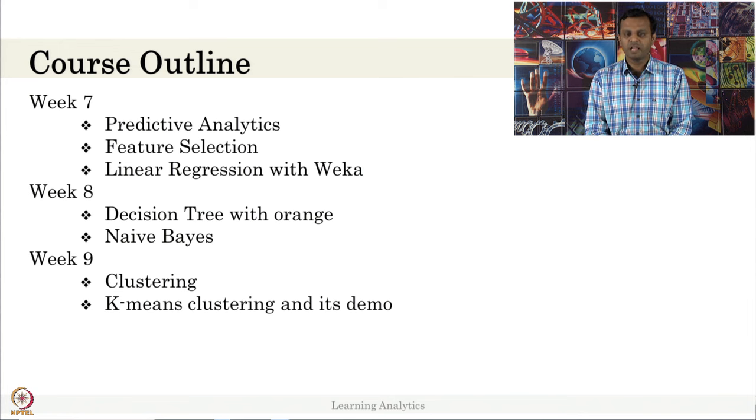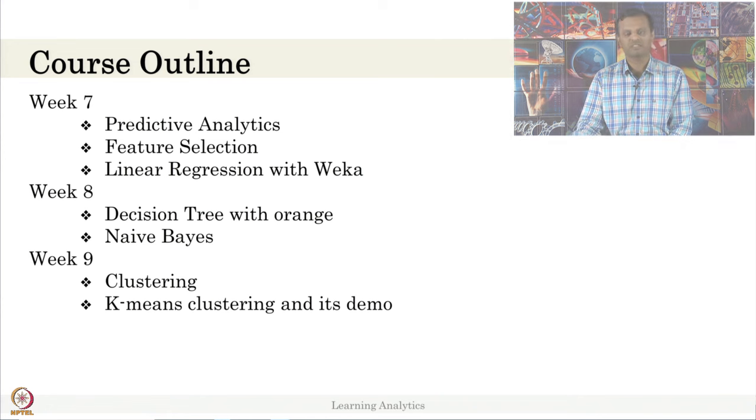In week eight, we will describe what is decision tree with Orange and we will talk about naive Bayes. As I mentioned this course, although it is not an ML course, we will touch all these algorithms which are very basics. We will explain the concepts, how it works. Then we will also show how to use tools to execute these algorithms. In week nine, we will go for unsupervised machine learning, that is clustering, and we will show what is clustering with demo.